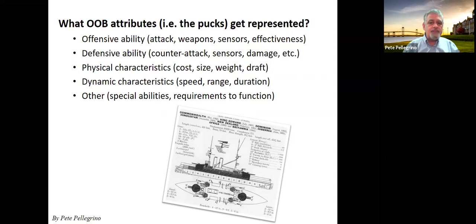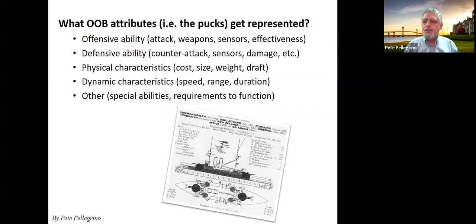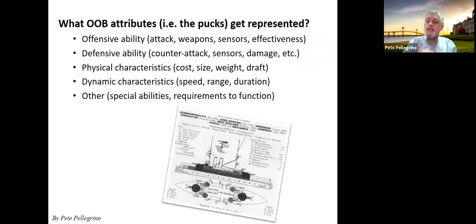From a military and naval perspective, obviously things like the offensive capability of the puck matter. Does it have a defensive nature — armor — that offsets the offensive capability of opposing pucks? Are we interested in the physical weight, shape, size, or color? Dynamic features like speed, maneuver, how far it can go, endurance. And then any other attribute where you're asking: is it important for players to be aware of that to make a decision, and how are we going to show it?